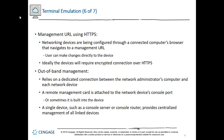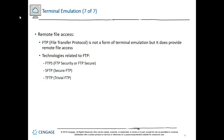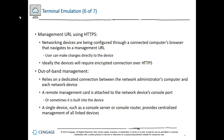Out-of-band management dedicated connections allow network administrators to power up a device, change firmware settings, reinstall the operating system, and monitor hardware sensors. Solutions range from basic reboot abilities to full-scale device management. A remote management card attached to the network device's console port — or built into the device — may include a dialing modem via wired phone line or cellular connection to provide backup command-line interface access in the event of a catastrophic network shutdown. A single device, such as a console server or console router, provides centralized management of all linked devices.